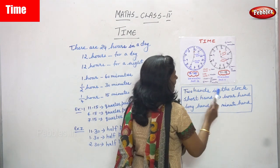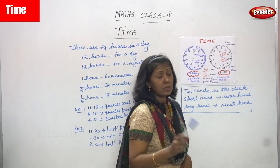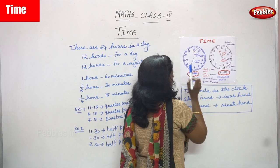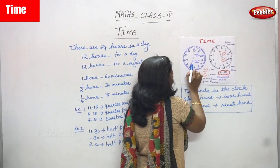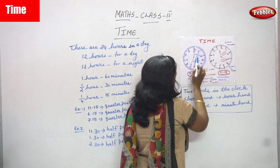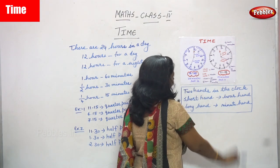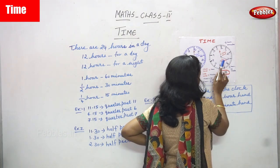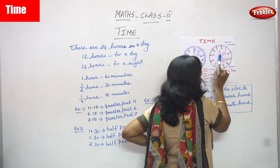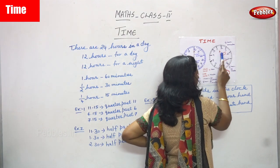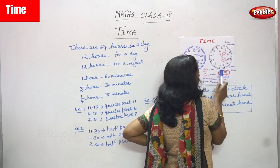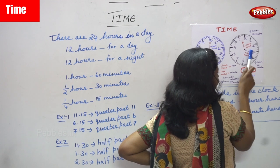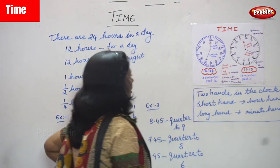I'll repeat once again: how many hands are in the clock? There are two hands in the clock. One is the short hand and another is the long hand. Short hand is the hour hand and long hand is the minute hand. Short hand is red in color and minute hand is blue in color. In this diagram the same thing: there are two hands, one is red — the small hand — it denotes the hour hand, and the long hand is violet, denoting the minute hand.